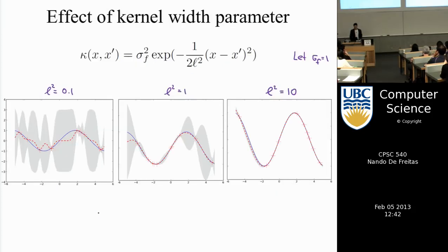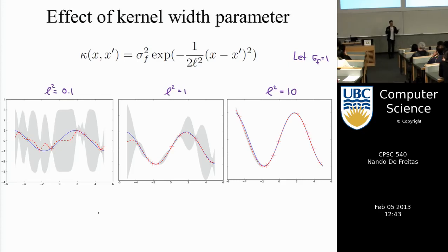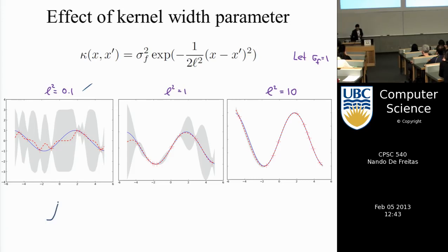We also looked at the effect of choosing the kernel width. The kernel has parameters — you can decide whether to be similar to things only very close by or further away by changing the length scale parameter L. If L is very small (a very thin kernel), only nearby points are similar, and you get a more wiggly function, which is what we observe.